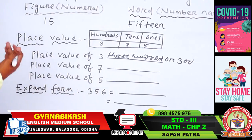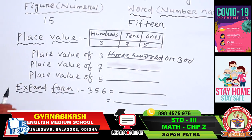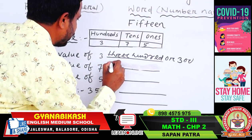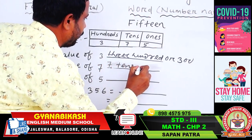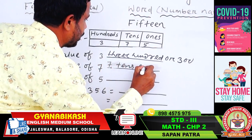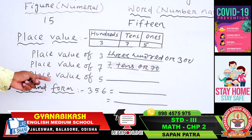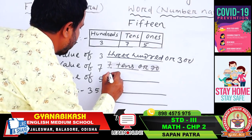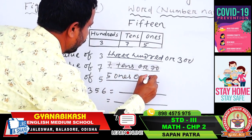The place value of 7 is 7 tens, that means 70. Similarly, the place value of 5 is 5 ones, that means 5.